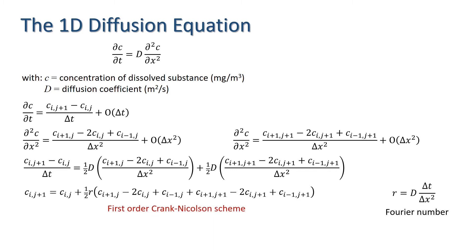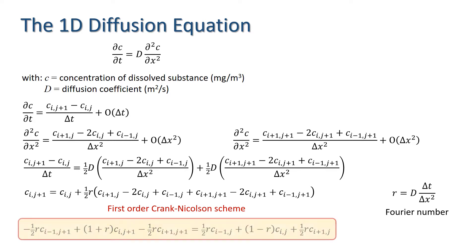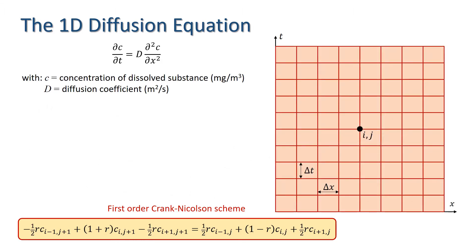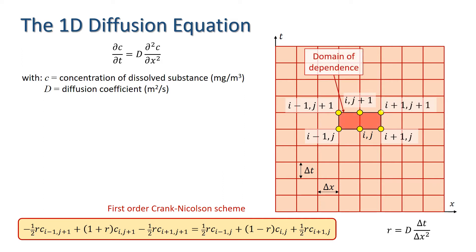Rearranging so that values of c at time step j+1 are on the left-hand side and values at time step j are on the right, we have our first-order Crank-Nicholson scheme for the diffusion equation. Looking at the points on the finite difference grid, we can see that we have a rectangular domain of dependence.